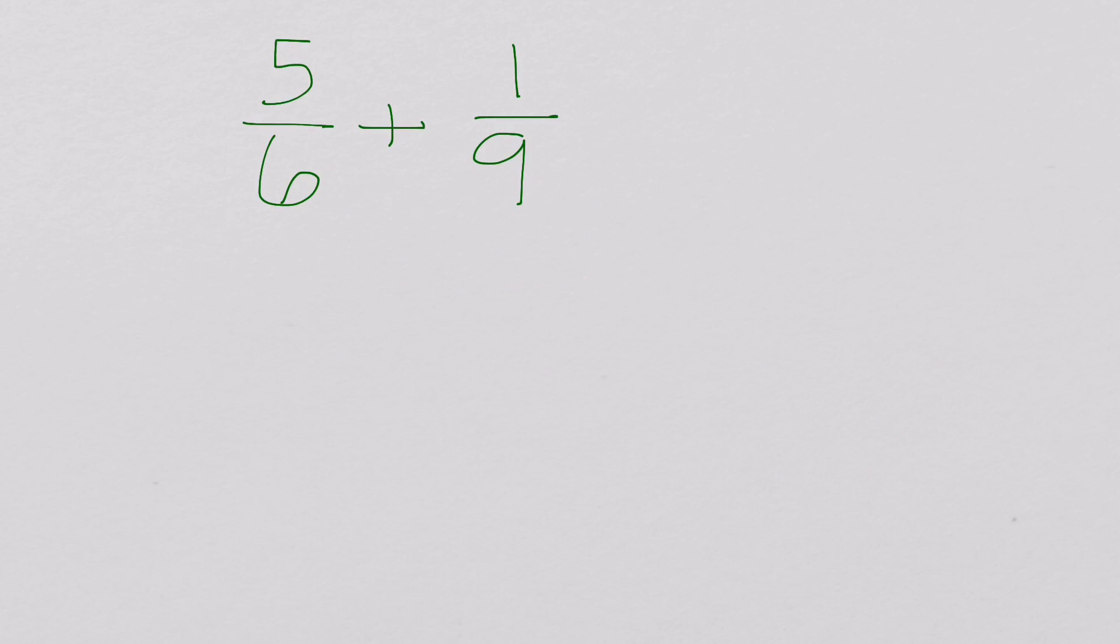So here I have 5 sixths plus 1 ninth. Just like before, we'll multiply our denominators together. So multiply 6 times 9, and we get 54.